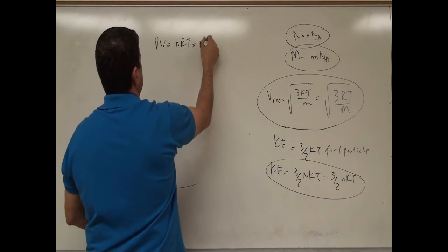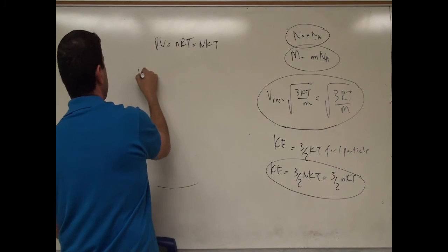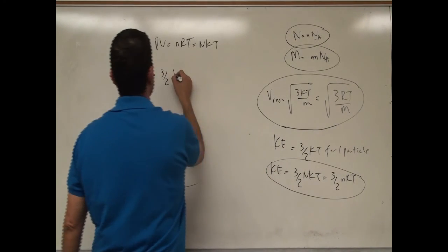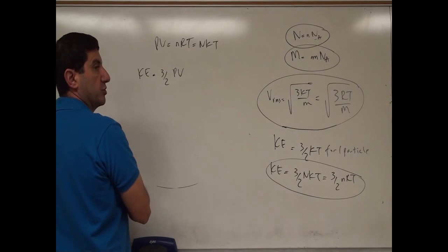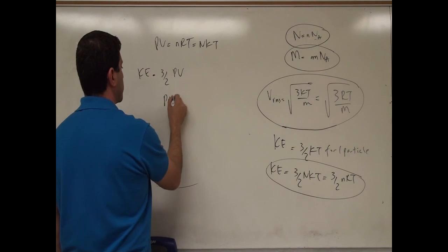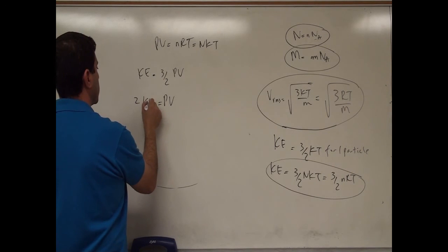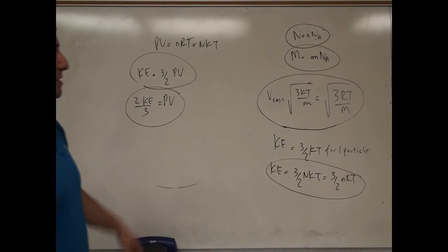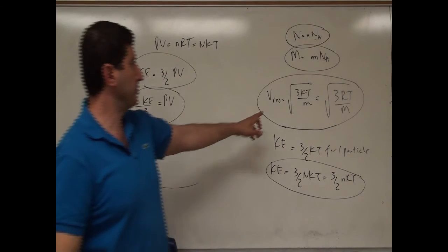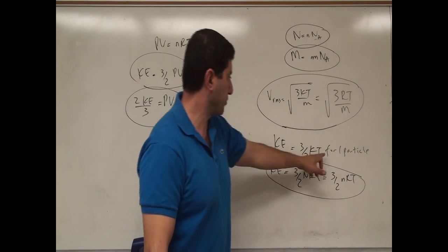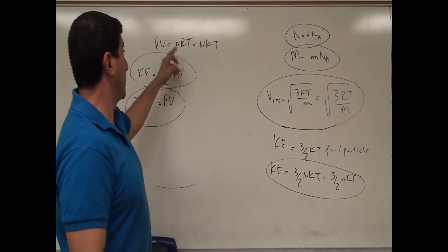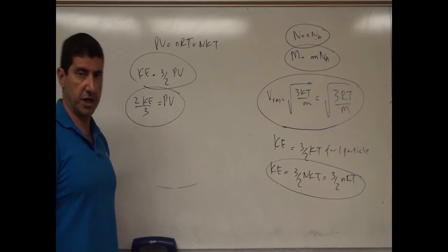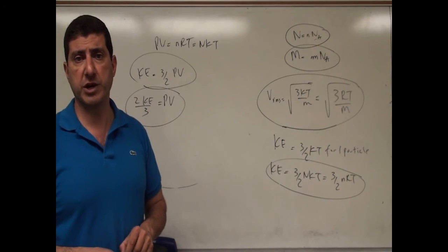The kinetic energy per molecule is (3/2)kT. Multiplying by N total particles gives total kinetic energy = (3/2)NkT = (3/2)nRT. Since P·V = NkT, we also have P·V = (2/3)·KE_total. This board summarizes all the equations proven: the root mean square velocity definition, kinetic energy per particle, total kinetic energy, the ideal gas law, and the relationship between pressure, volume, and kinetic energy. Next I'll do an example utilizing these equations.